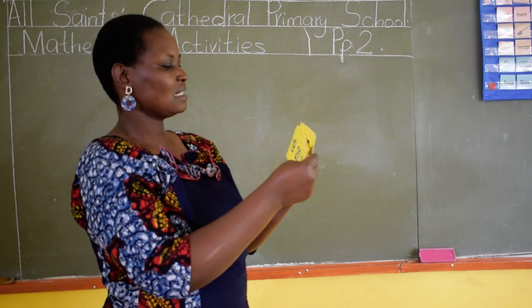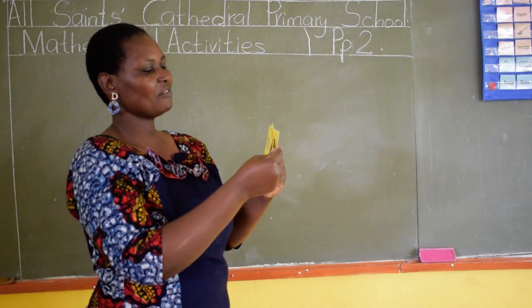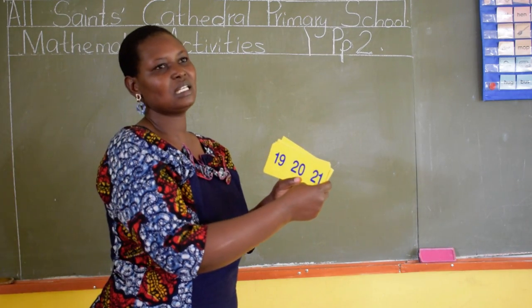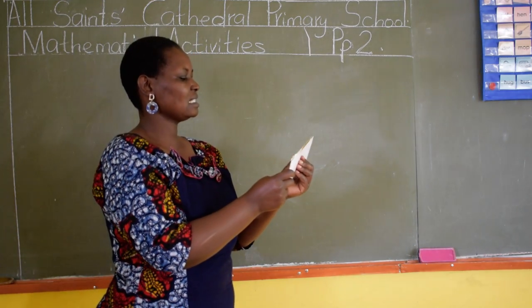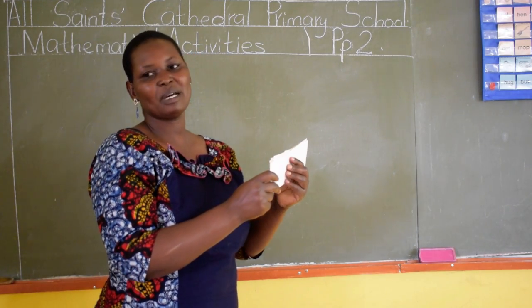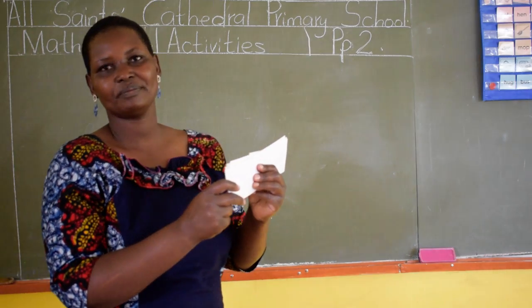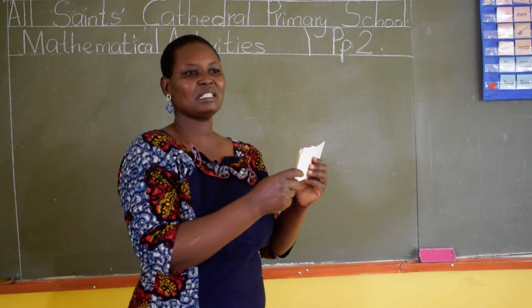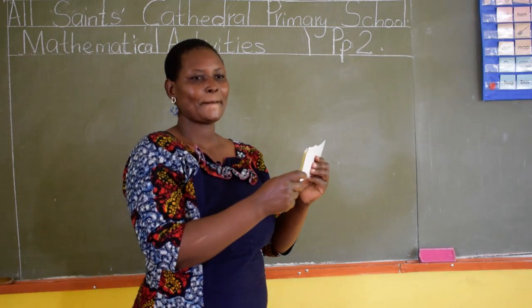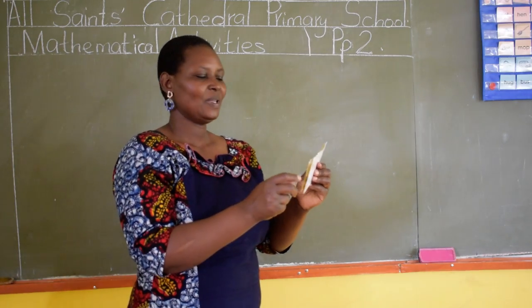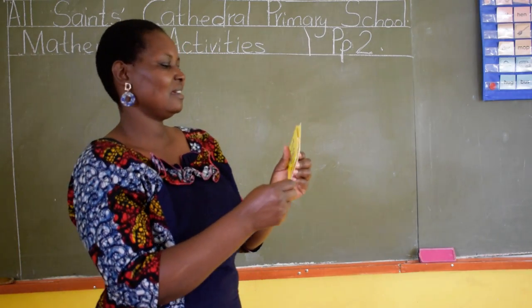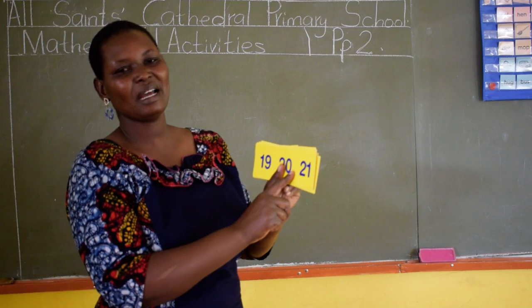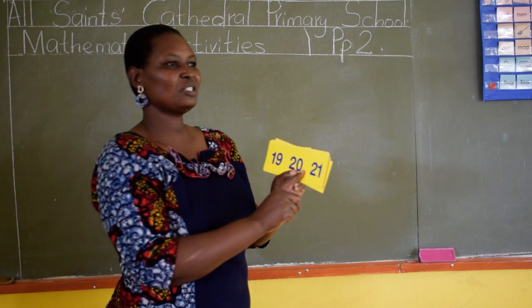Next is number 19. After number 18 we move to number 19. Which is the next number after number 19? Yes, Hayden? Very good. After number 19 we have number 20.